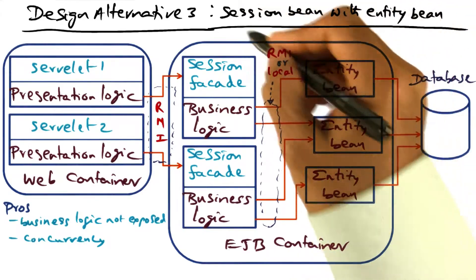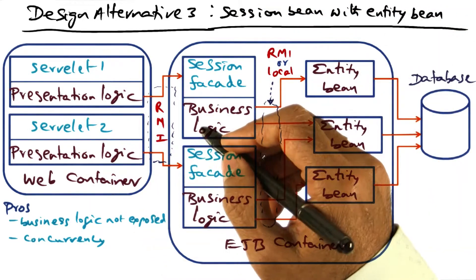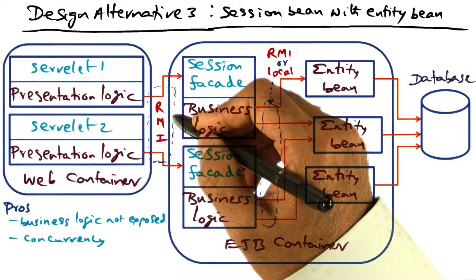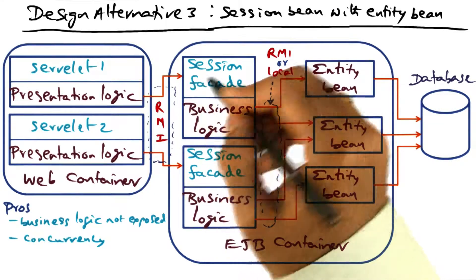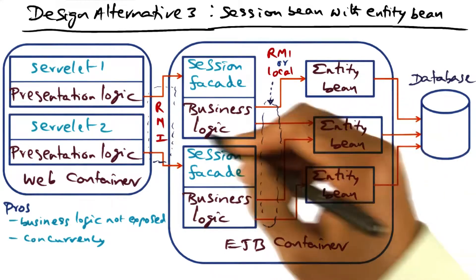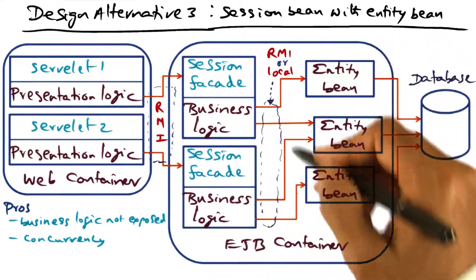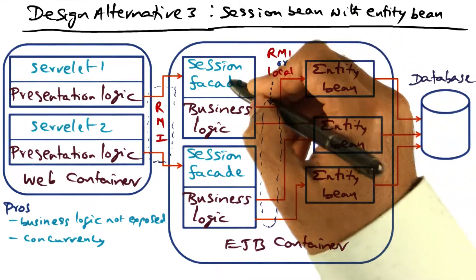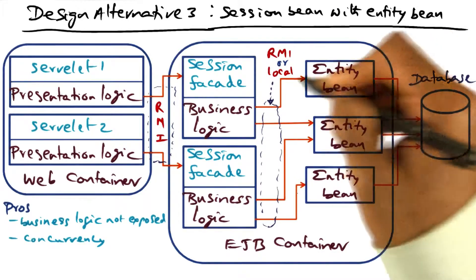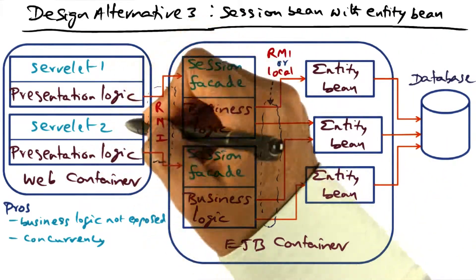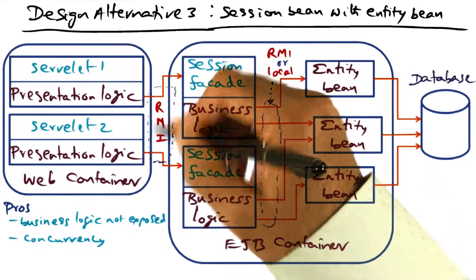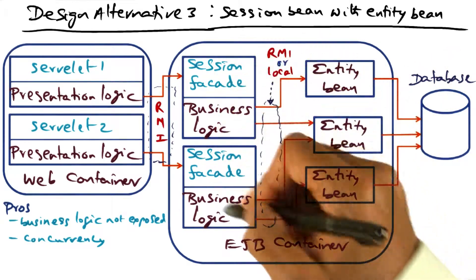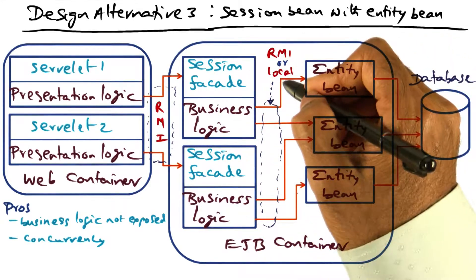We have a couple of choices for how to structure the session bean with the entity bean. The web container uses RMI, or remote interface, in the distributed object framework of Java in order to communicate with the business logic. The session facade can communicate with the entity bean either using RMI, in which case the interaction between the session facade and the entity bean is very similar to the interaction between the servlet and the session facade.